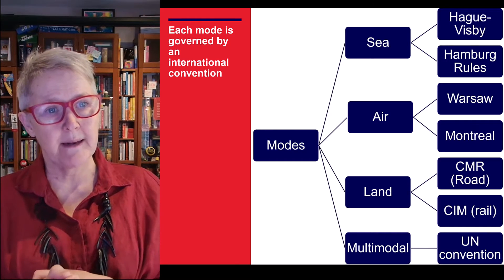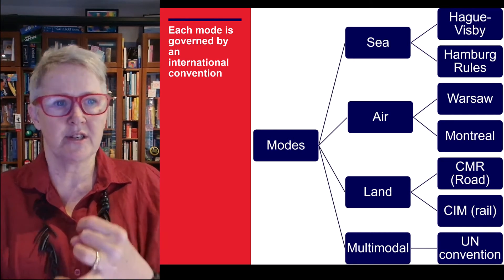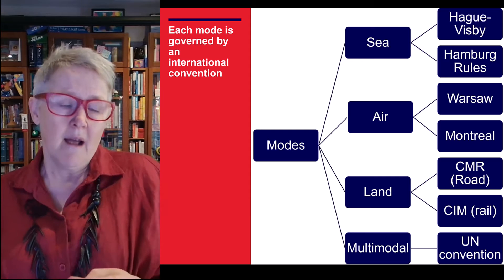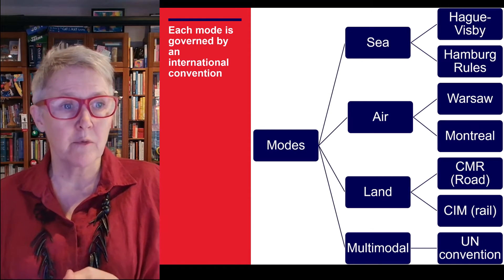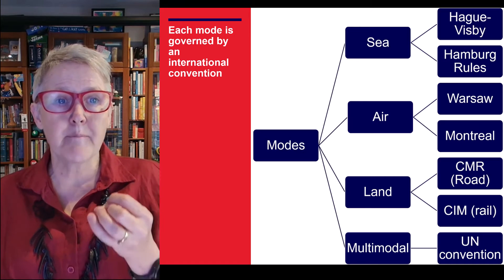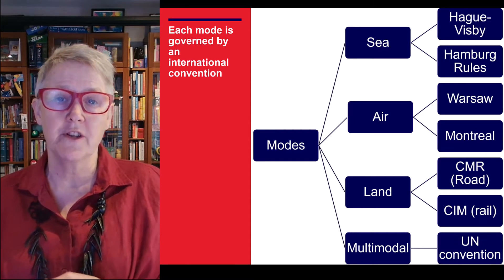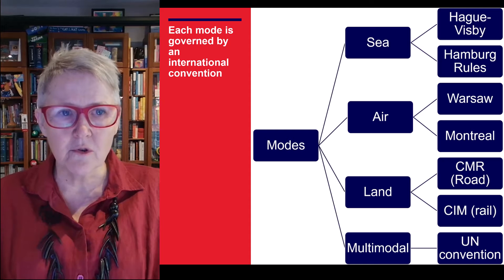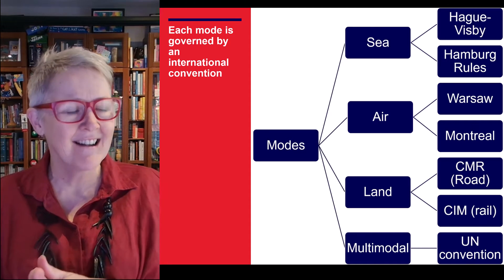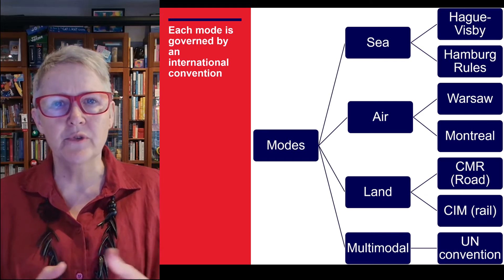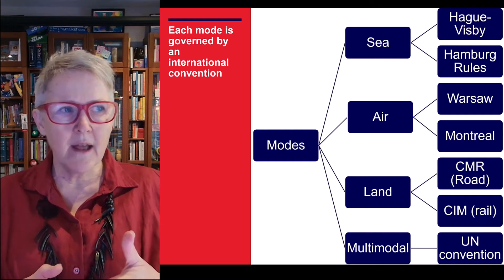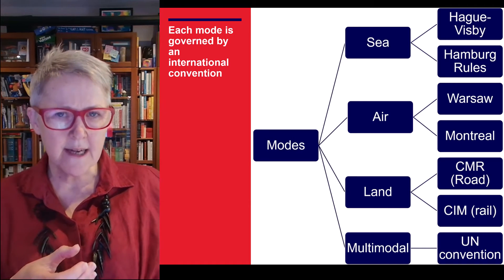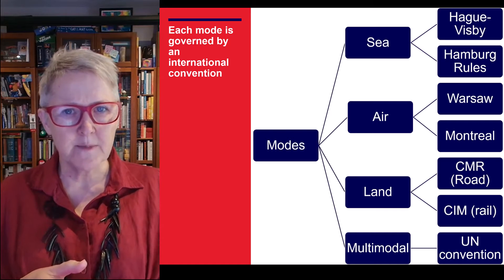Let's think about the role of international conventions in contracts for the carriage of goods by sea. The primary ambition is standardization. Conventions including Hague, Hague-Visby, and Hamburg have the objective of standardizing practices and legal principles across jurisdictions, providing a more predictable and uniform legal framework for the international shipping industry. Having two key sets of rules does limit that ability to standardize.